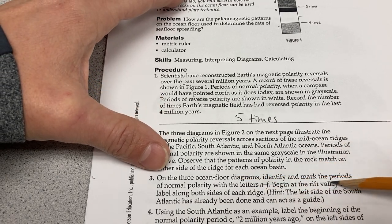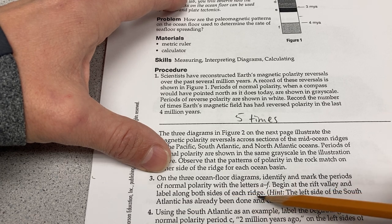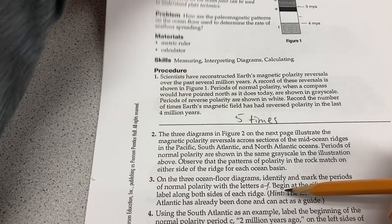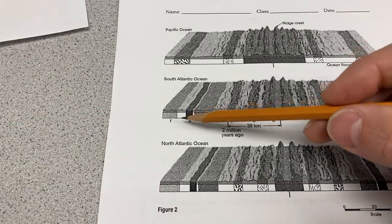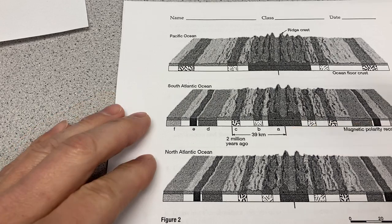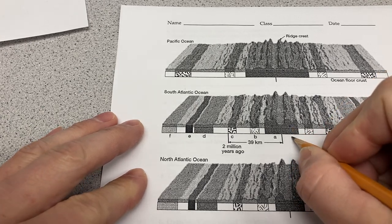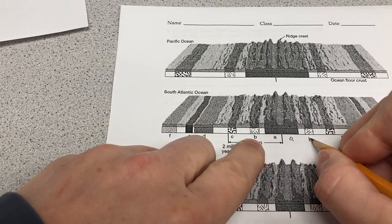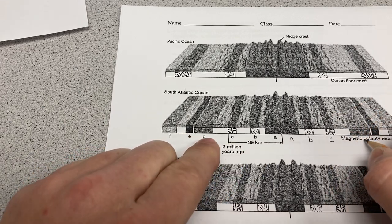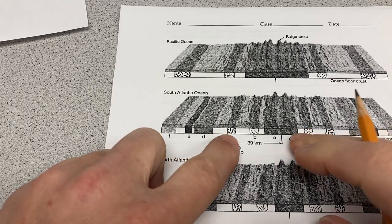On the three ocean floor diagrams, identify and mark the periods of normal polarity with the letters A through F, beginning at the rift valley and labeling along both sides of each ridge. The left side of the South Atlantic has already been done as a guide. So if this is A here on the left, then this is A on the right as well. This is B on both sides. C is here, D is over here, and then we've got E and then F. We're only labeling the normal polarities — we don't label the reversed ones, which are the white sections.